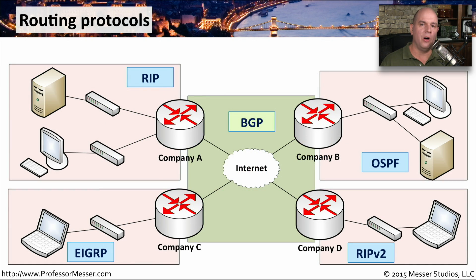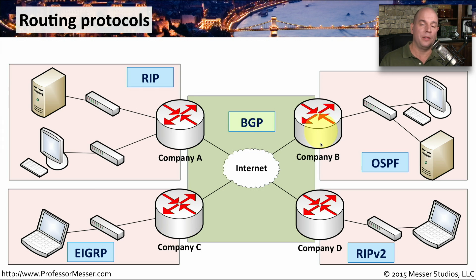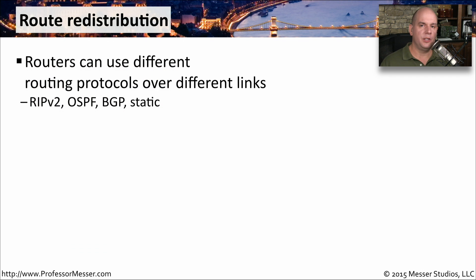One of the great things about having all these choices of dynamic routing protocols is that we can find the one that fits perfectly for our organization. But other companies may choose different dynamic routing protocols, and if we ever need to communicate with one of those other companies, these different routing protocols will not talk to each other. For instance, one company may use RIP, another EIGRP, another RIP version 2, and another OSPF — with BGP connecting them all. Our OSPF can't update routes inside another company's EIGRP because these routers are communicating with completely different routing protocols. This creates a problem where autonomous systems managed by different people have decided on their own sets of dynamic routing protocols.